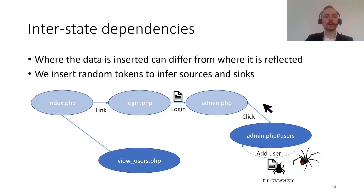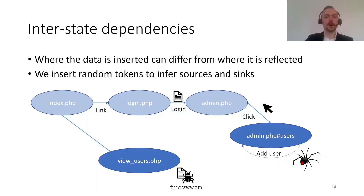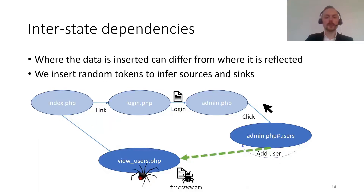For interstate dependencies, where data is inserted can differ from where it's reflected. To detect these sources and sinks, we insert random tokens. For example, when adding a user, the username we pick could be some random string like 'FRCVW'. This is injected into the application and might be reflected on another page. So we continue to crawl, and for every page we look for all of the tokens we have inserted. When we find one, we infer the relationship between the admin page and the view user page. This is important for fuzzing — if we update a username rather than adding one, we must check the sink for every payload we inject on the source, as we might only see the final payload when we continue crawling.